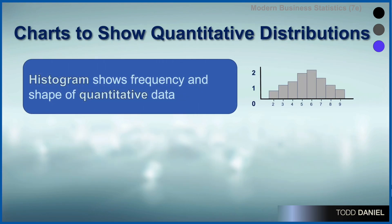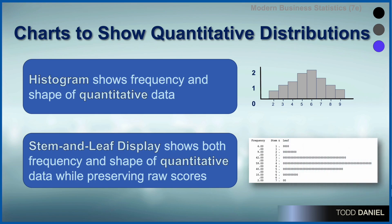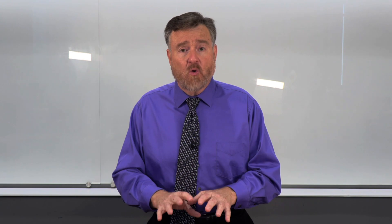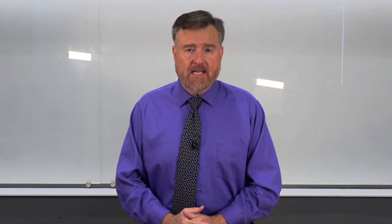These are charts that show quantitative distributions — scale-level data. The go-to graph is a histogram, which shows the shape of the quantitative data. However, there are times when you may want to use a stem and leaf display to both show the shape of the data and preserve the raw scores in your data set. I've never used a stem and leaf diagram in a publication, but I have used them extensively for my own purposes when exploring raw data from data collection.